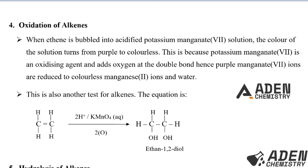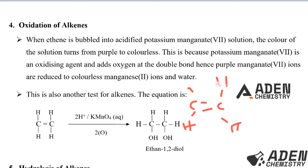This is also another test for alkenes. When ethene is bubbled through acidified potassium manganate(VII) solution, we have two moles of hydrogen ions acidifying the potassium manganate(VII) using sulfuric acid. The potassium manganate(VII), which is the oxidizing agent, adds two atoms of oxygen at the double bond, causing the double bond to break up.